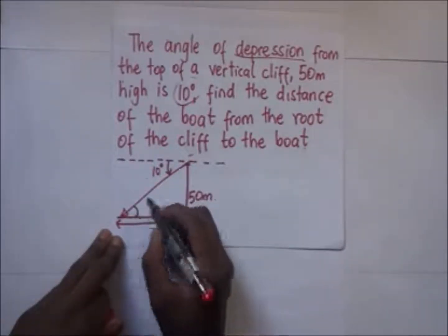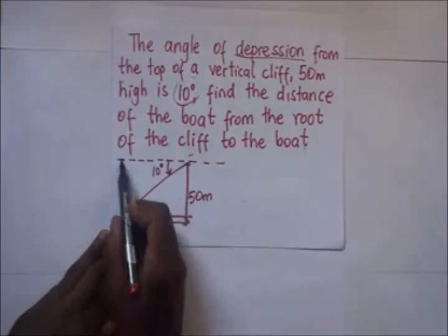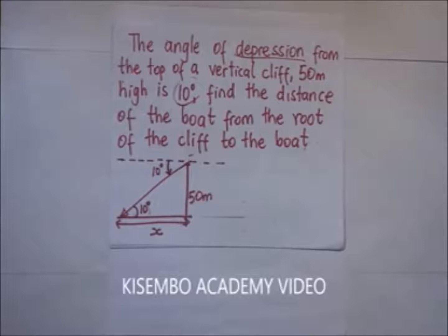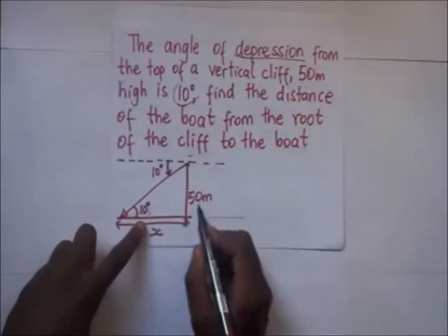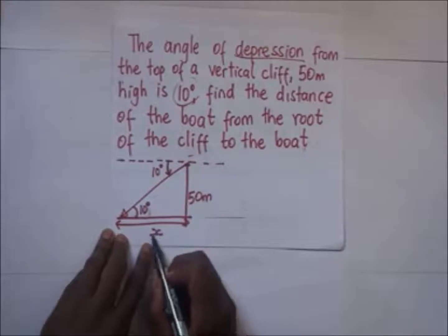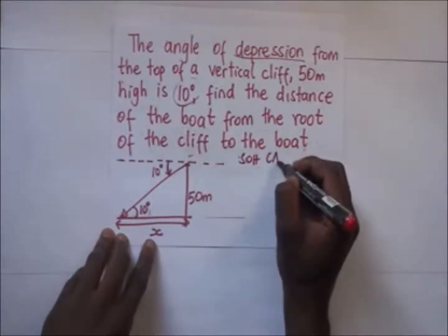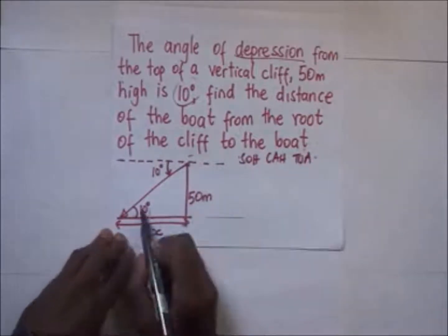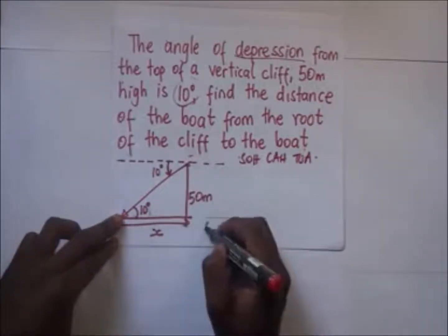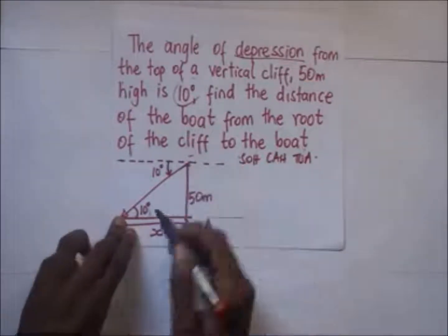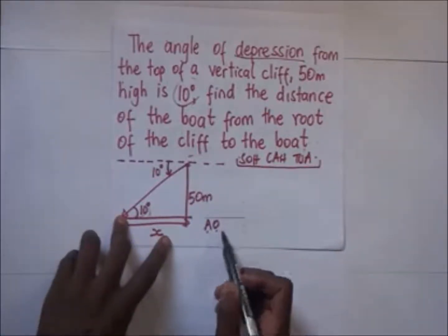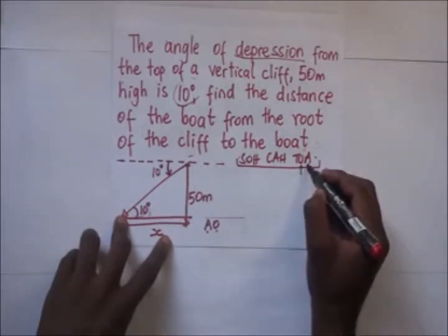To find this distance x, we need to know this angle. These are alternate angles because this horizontal is parallel to that horizontal, so if the angle of depression is 10 degrees, this angle inside the triangle is also 10 degrees. With 10 degrees, the distance x we are looking for is adjacent to that angle, and the height of 50 meters is opposite. We need something having both adjacent and opposite.